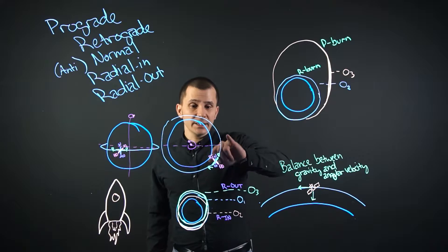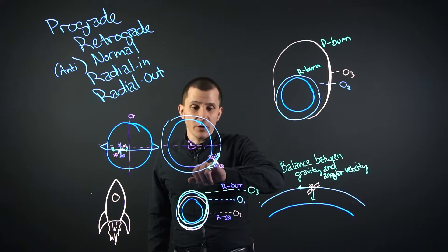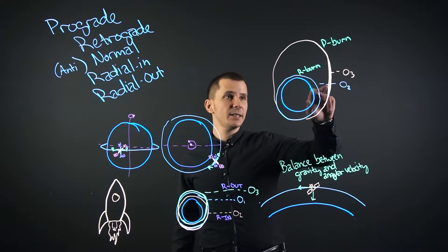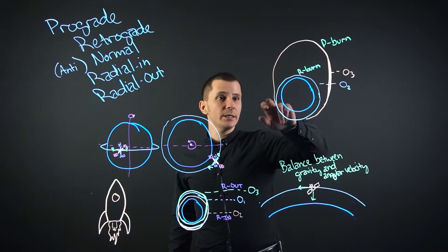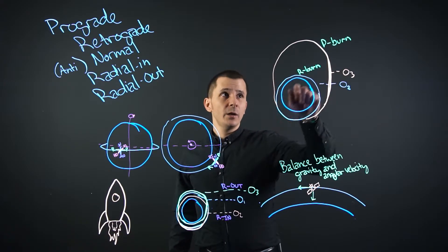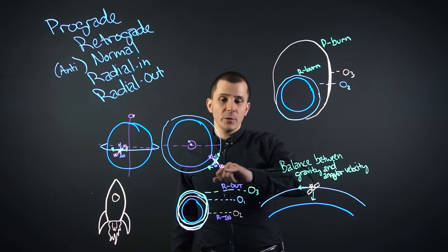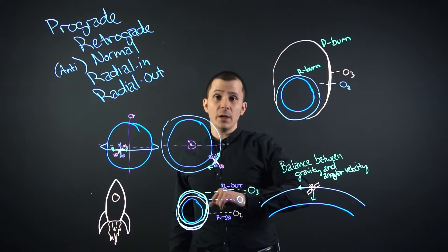So our prograde is this, and our retrograde is the opposite. A prograde burn would actually extend the orbit outward in such a fashion, and a retrograde burn would lower the orbit where your apoapsis and periapsis change in regard to your prograde and retrograde velocity.